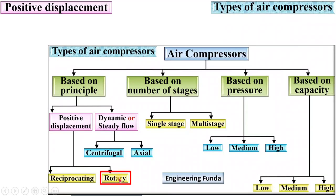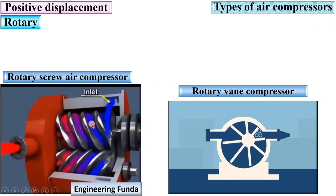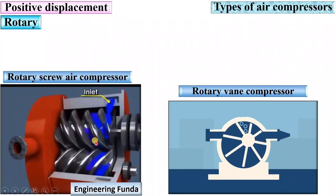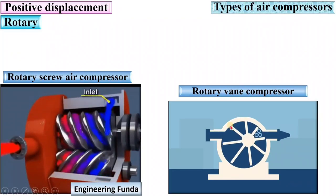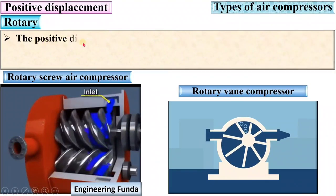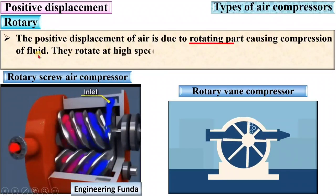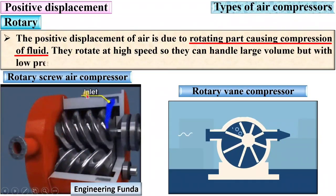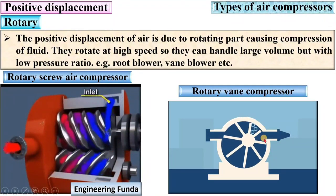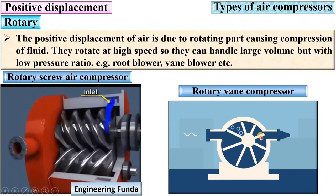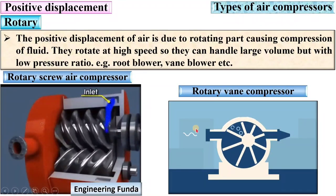Next, rotary compressor. Here you can see a rotary air compressor — specifically a screw compressor — and also a rotary vane compressor. The positive displacement of air is due to the rotating part causing compression of fluid. They rotate at high speed, so they can handle large volume but with low pressure ratio. Examples: root blower, wind blower, etc.